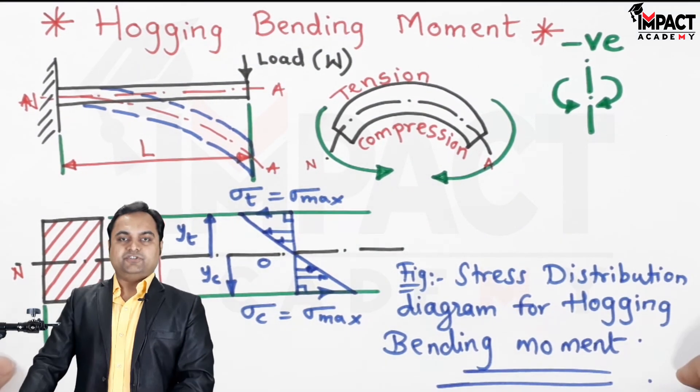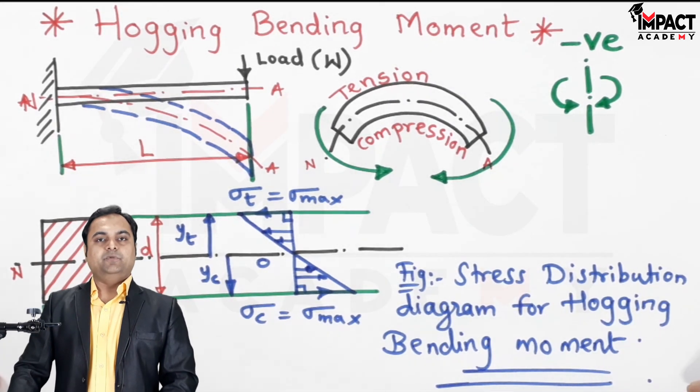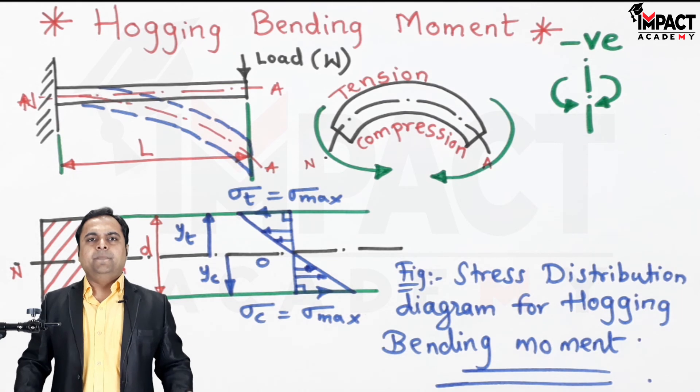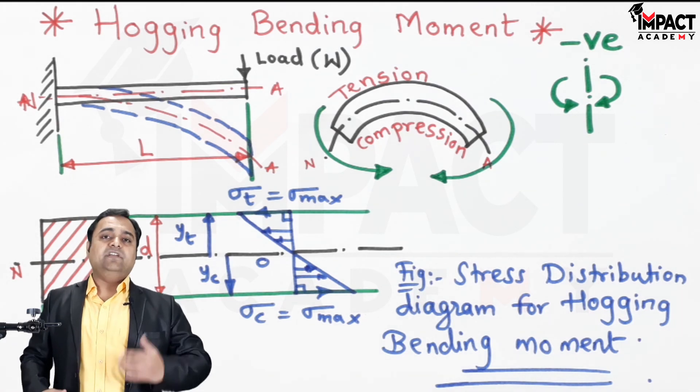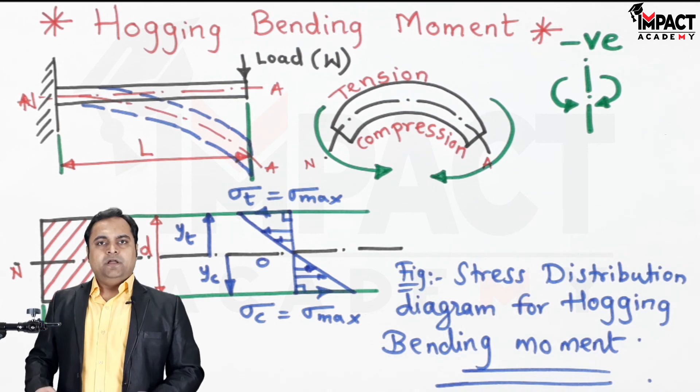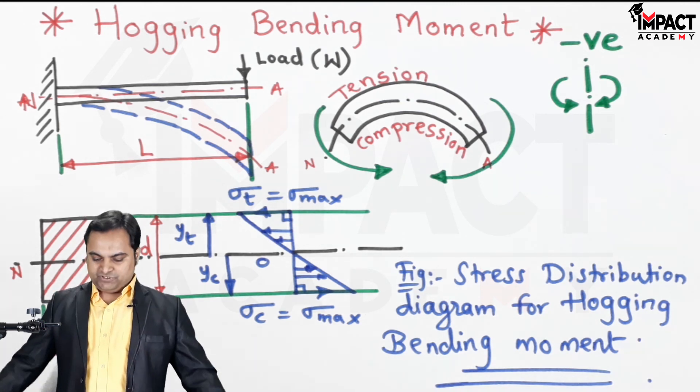So this is the stress distribution diagram for hogging bending moment. Hogging bending moment mostly takes place in case of cantilever beam, but sometimes it may even be there in case of a simply supported or an overhanging beam depending upon the kind of loading and the types of supports.